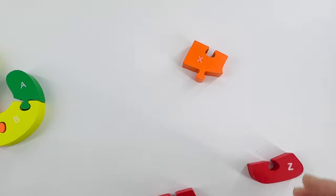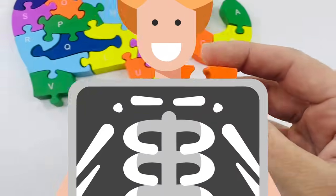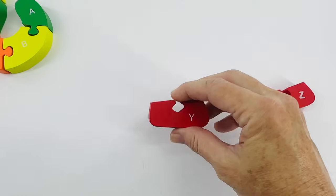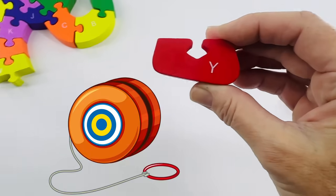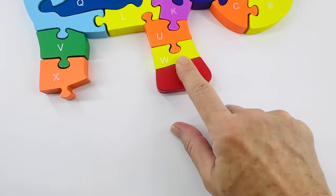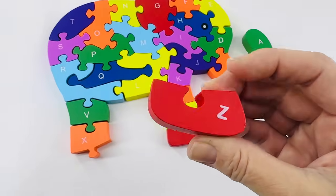After the letter W is the letter X. X is for x-ray. There we go. We're almost done. The letter Y is for yo-yo. I wonder which leg? Yep. Right there. And our last letter, the letter Z. Z is for zebra.